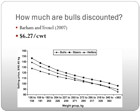How much are bulls discounted? Borum and Troxel found it was about $6.27 per hundredweight. In my opinion that is not nearly enough — I think we should be discounting bulls more than that. It's really interesting to look at the graph: bulls are in the middle, steers at the top, and heifers below. As bulls get heavier, their price line eventually crosses and bulls become worth less than heifers at heavier weights, because we know the heavier the bull the harder it is to castrate them.